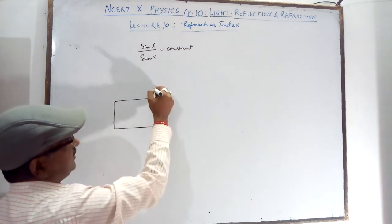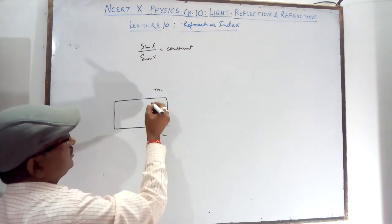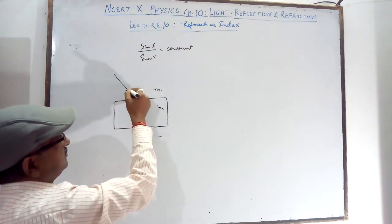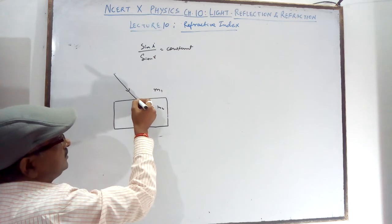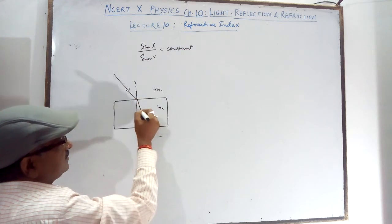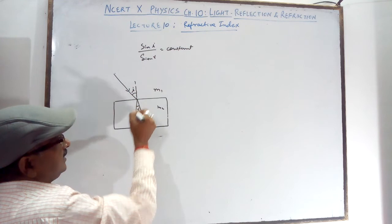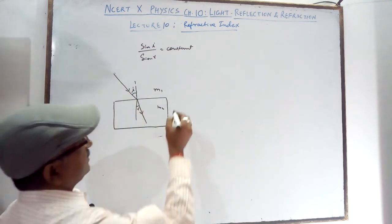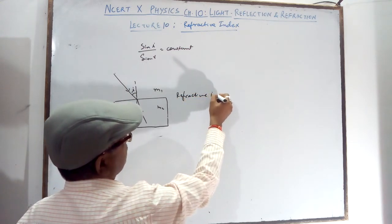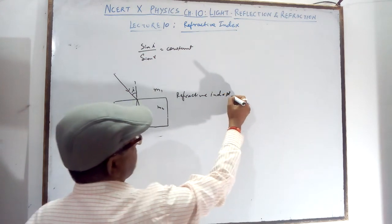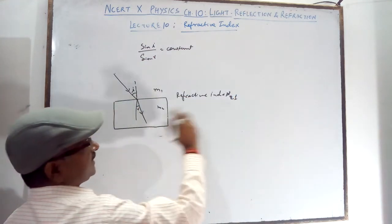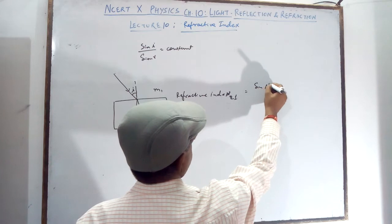If there are 2 mediums given, there is medium 1 and medium 2. A light ray coming from this medium and going in this direction at the normal, it bends towards this direction. So here is the angle I and here is R. Then we can see that Refractive Index of Medium 2 with respect to 1 will be sin I upon sin R.